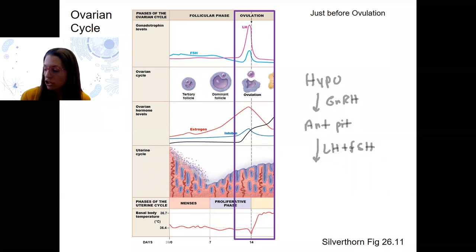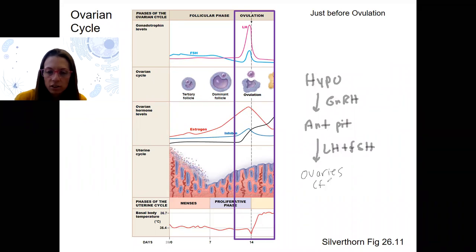Now, just before ovulation, things are going to change. We still have our same HPG axis here. Add in ovary again, ovaries. It's still the follicles, mature follicle at this point.